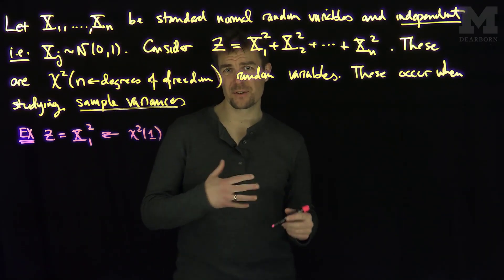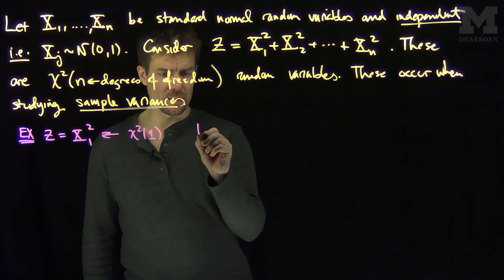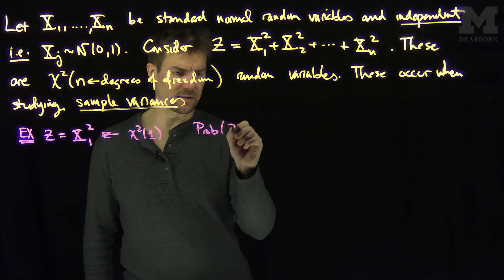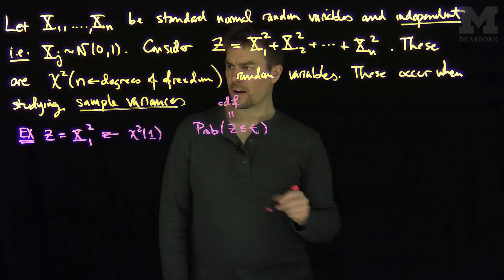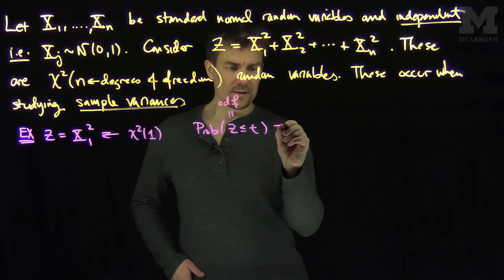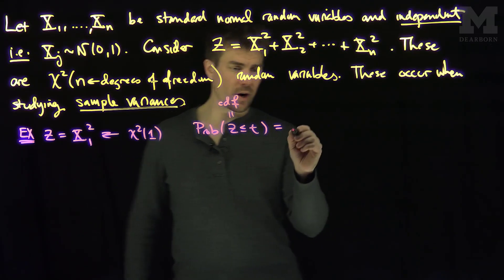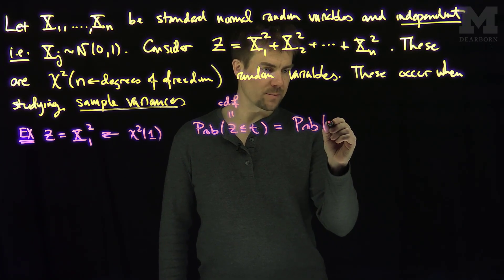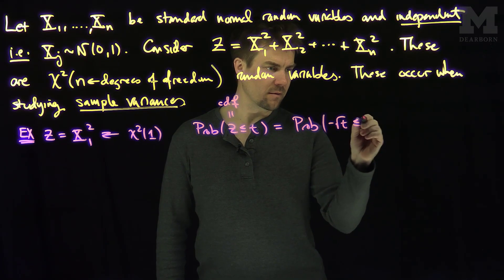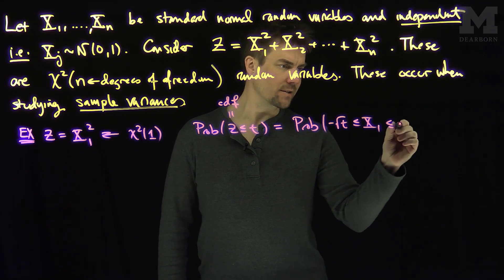I would like to know what the probability density of this function is. If I look at the probability that z is less than or equal to t, this is the CDF of this random variable z. And this is the same thing as, since z is x1-squared, this is the same thing as the probability that x1 is between negative square root t and positive square root t.